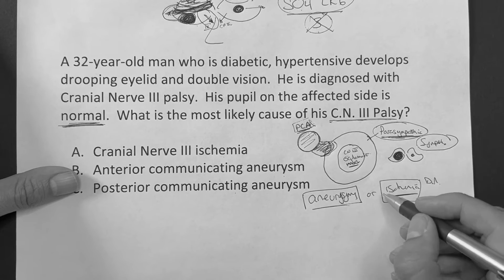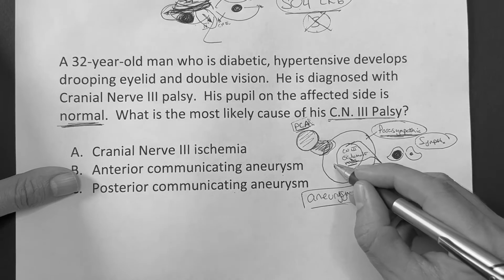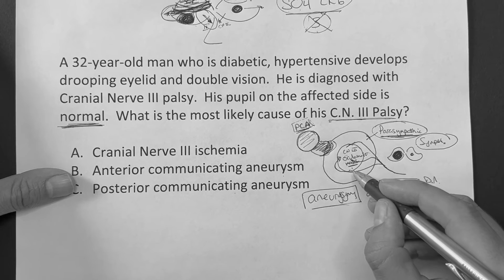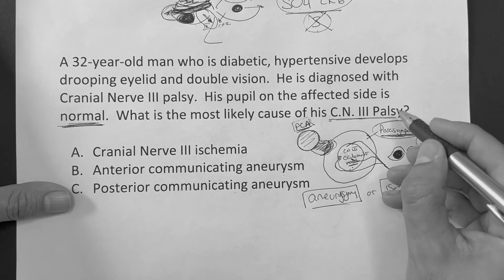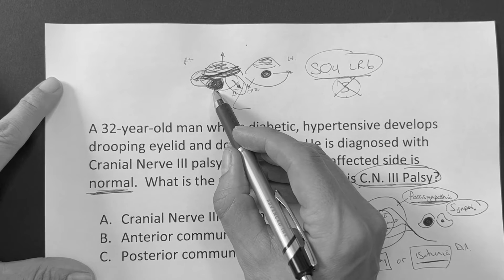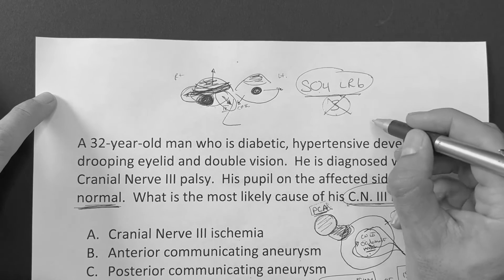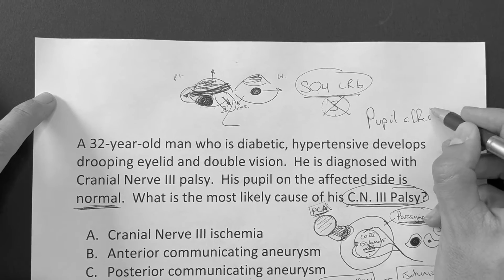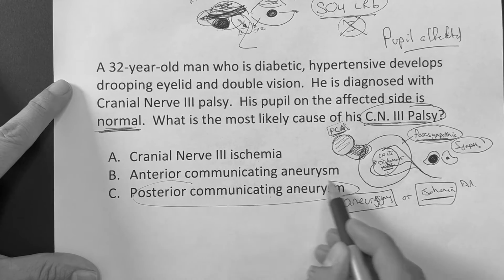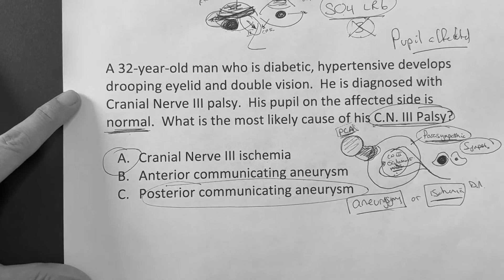The other cause is ischemia. With ischemia, the damage goes straight to the inner portion of the nerve, which affects the eye movement — the motor piece. So for the clinical decision: if the pupil is affected and dilated, I'm leaning toward a posterior communicating artery aneurysm. If the pupil is normal and unaffected, I go with cranial nerve 3 ischemia. That concept was just too much to fit into one minute.